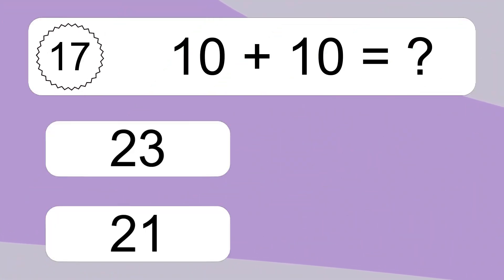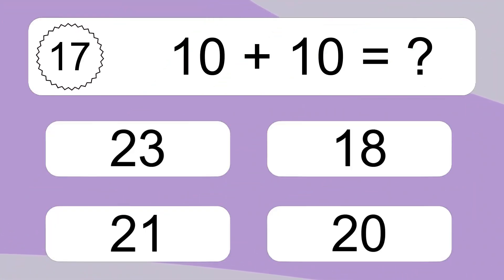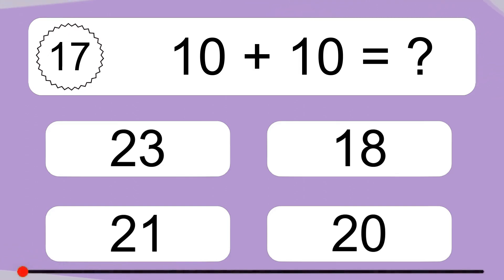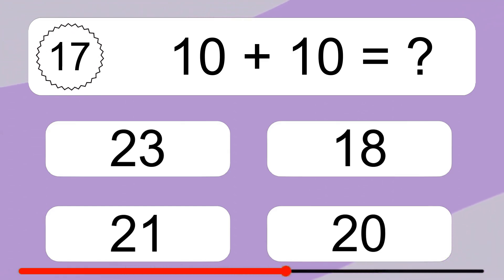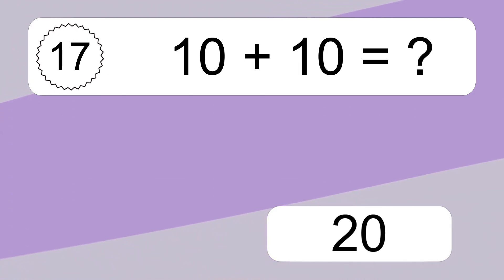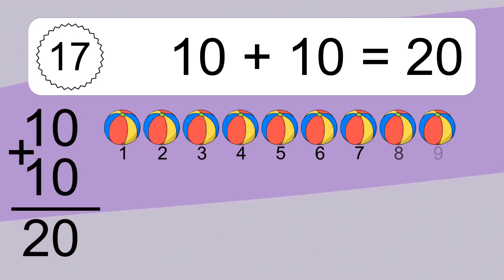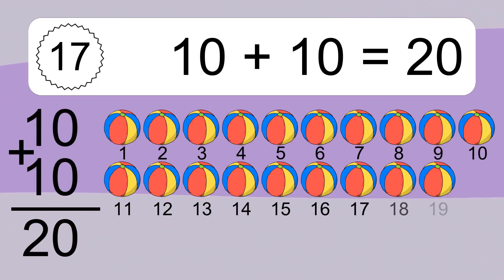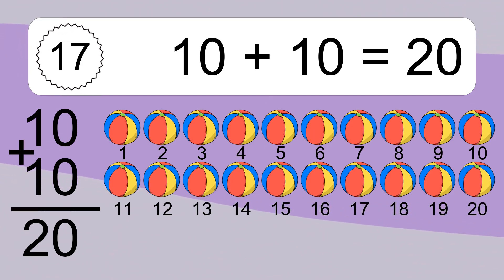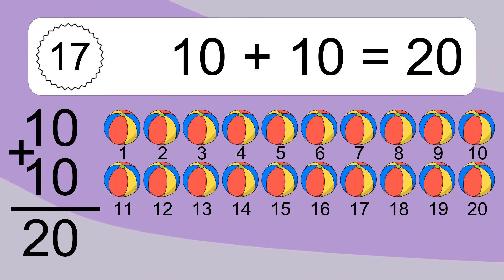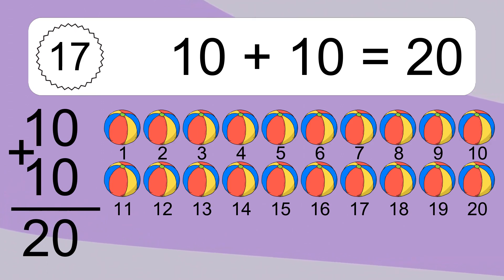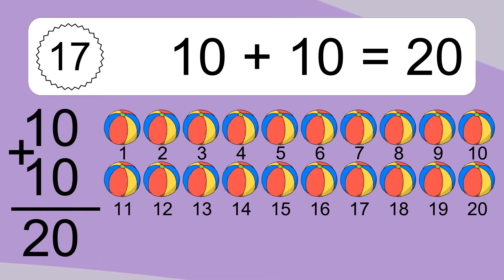10 plus 10 equals what? 10 plus 10 equals 20. Let's count it. 1, 2, 3, 4, 5, 6, 7, 8, 9, 10, 11, 12, 13, 14, 15, 16, 17, 18, 19, 20.